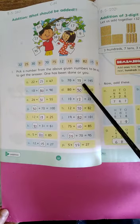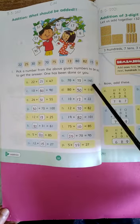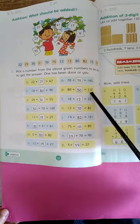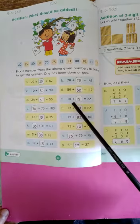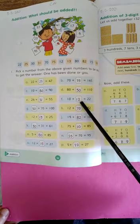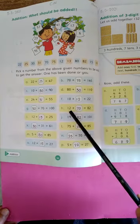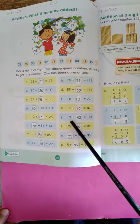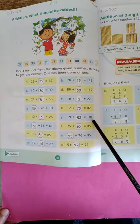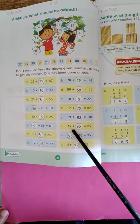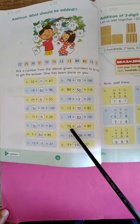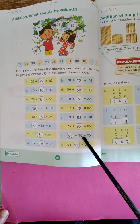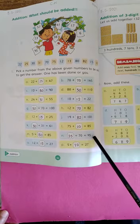Next one is eighty plus thirty is equal to one hundred and ten. Ten plus twelve is equal to twenty two. Twelve plus seventy is equal to eighty two. Nineteen plus eighty two is equal to one hundred and one. Seventy five plus ten is equal to eighty five. Twenty five plus seventy is equal to ninety five. Five plus twenty two is equal to twenty seven.